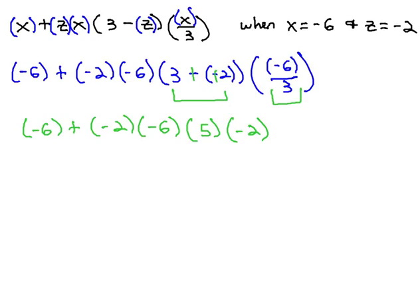We can now begin multiplying from left to right. So, we have negative 6, plus negative 2, times 6, is 12, times 5, times negative 2.